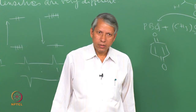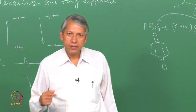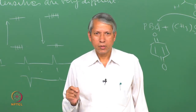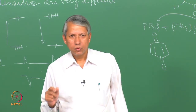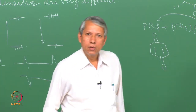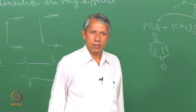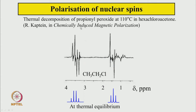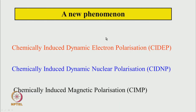Then many such experiments started appearing and people remembered the 1963 Fessenden and Schuller observation of hydrogen atom spectrum in opposite phase. There was a lot of activity to understand why such things happen — why unusual NMR as well as EPR signals appear. Selective population of various nuclear spin levels is taking place. This new phenomenon was termed chemically induced dynamic electron polarization (CIDEP) for electron spin polarization, and chemically induced dynamic nuclear polarization (CIDNP) for nuclear spin polarization.